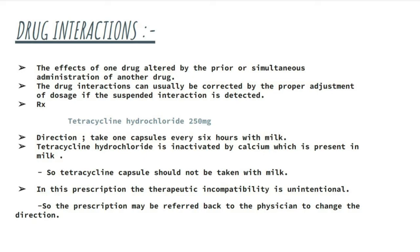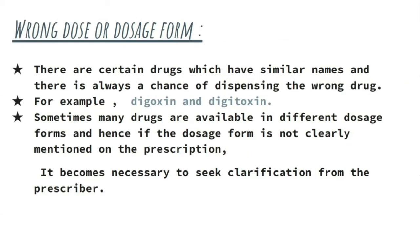There are many such examples, including MAO inhibitors — monoamine oxidase inhibitors — and their interaction with tyramine in food. Regarding wrong dose or dosage form: drugs with similar names or similar-sounding names may be confused for one another. For example, digoxin and digitoxin have very similar-sounding names and could be mistaken for each other, leading to a therapeutic incompatibility.